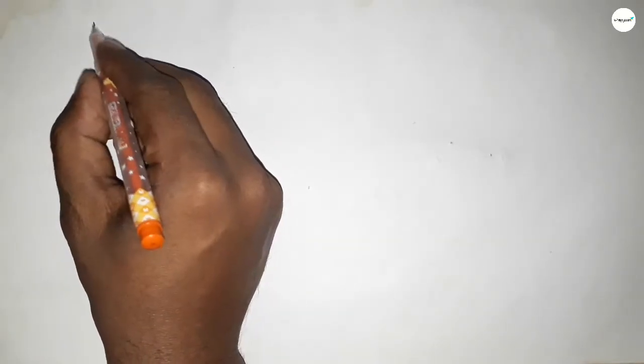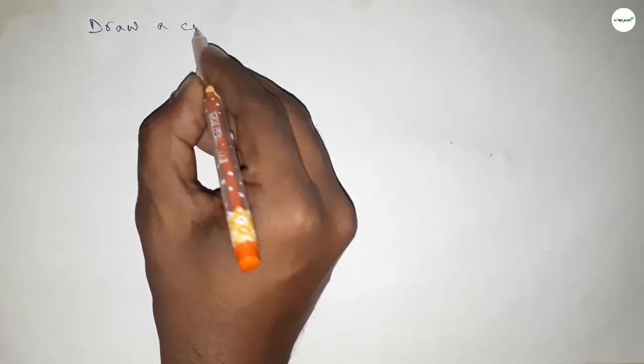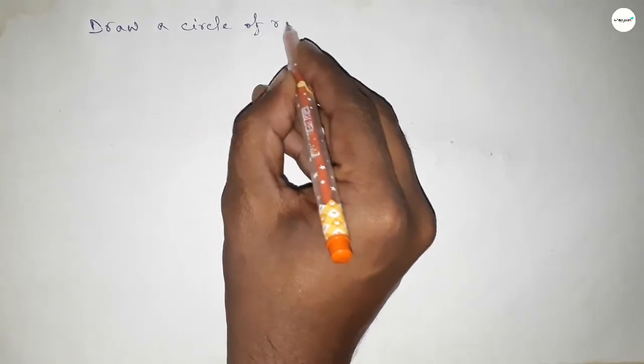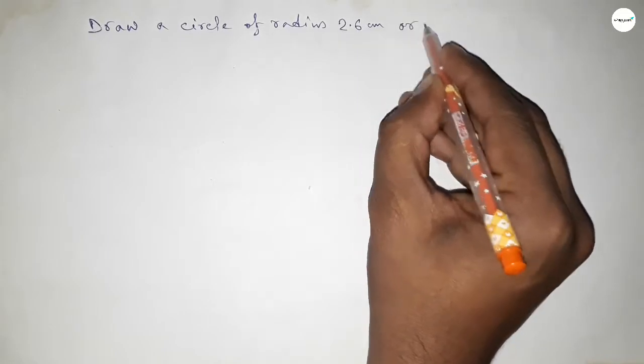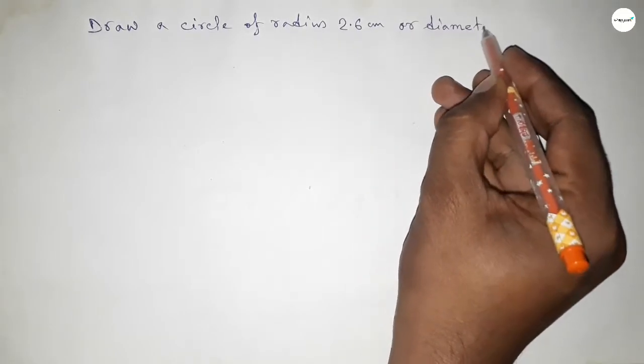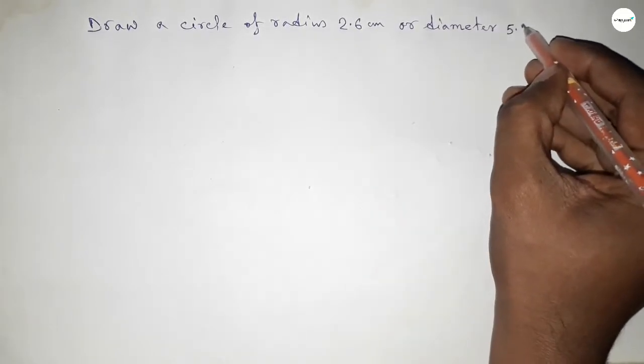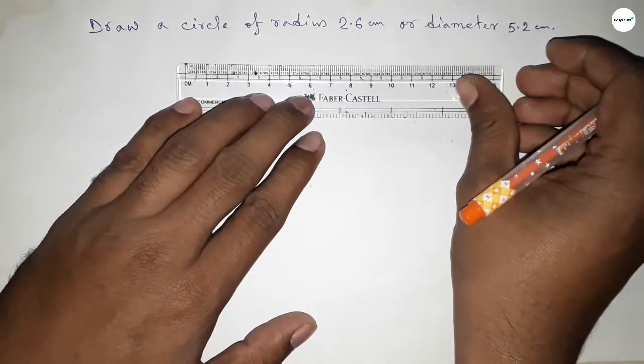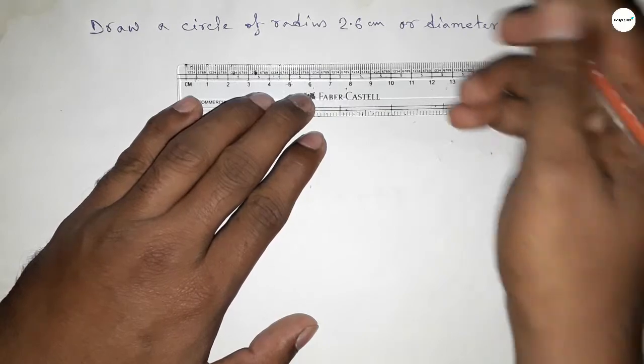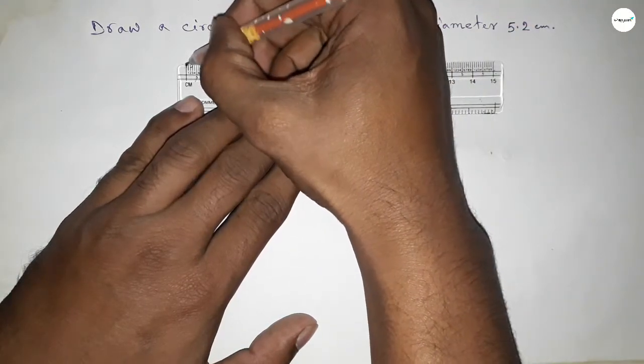Hi everyone, welcome to SH Chair Classes. Today in this video we have to draw a circle of radius 2.6 centimeter or diameter 5.2 centimeter. So let's start the video. First of all, drawing here the radius 2.6 centimeter.